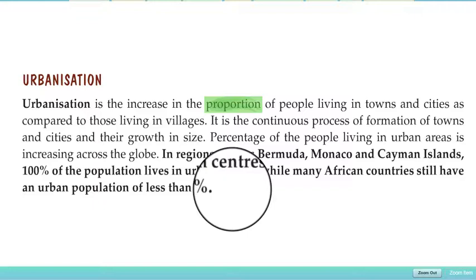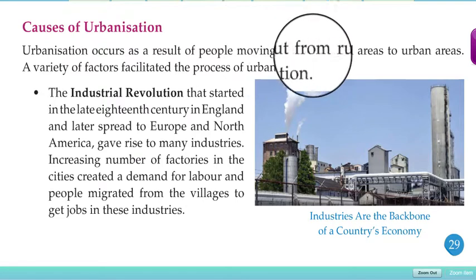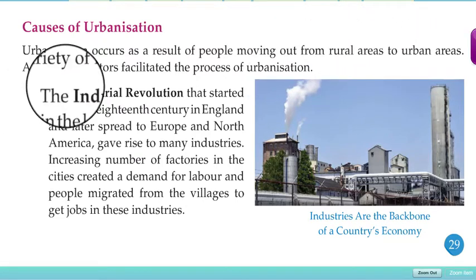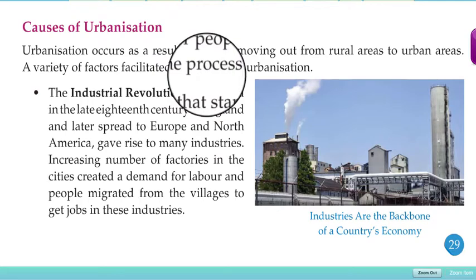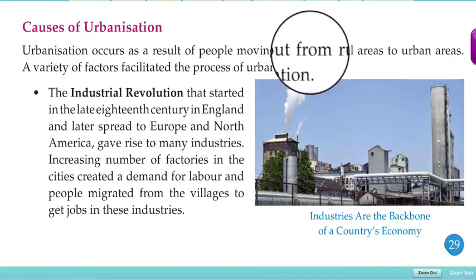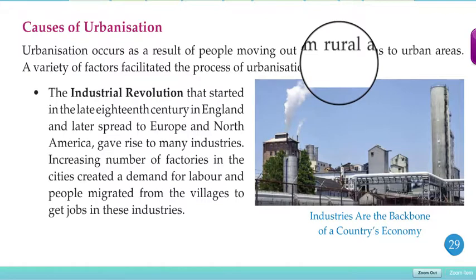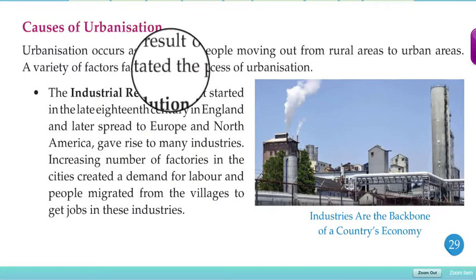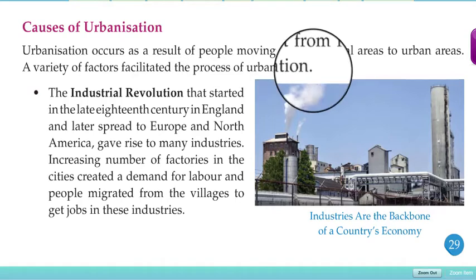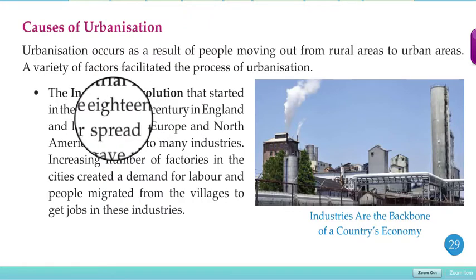What are the causes of urbanization? Urbanization occurs as a result of people moving from rural areas to urban areas. A variety of factors facilitated this process. The industrial revolution, which started in the late 18th century in England and later spread to Europe and North America, gave rise to many industries.